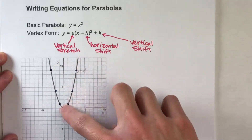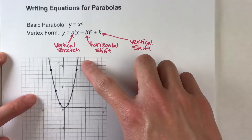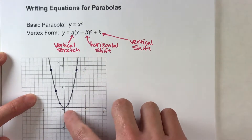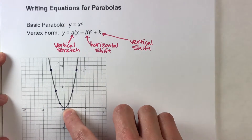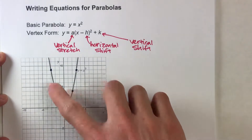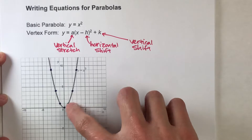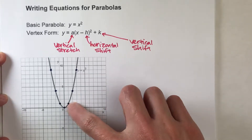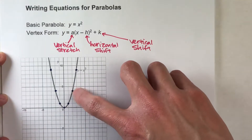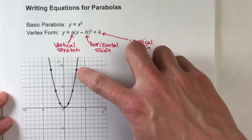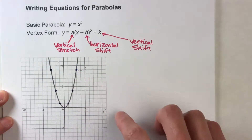That's what I've shown you right here. Notice a couple things about the basic parabola. The vertex of the basic parabola is at 0, 0. It follows this shape and has points spaced out like this — the first one's up 1, the next one's up 3, the next one's up 5. It follows that pattern and it's symmetrical on both sides.